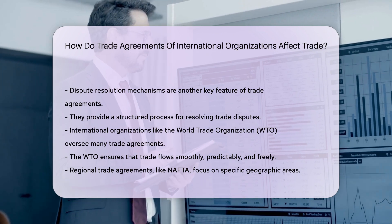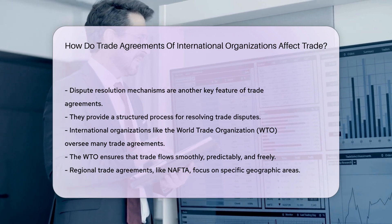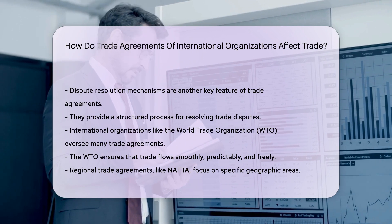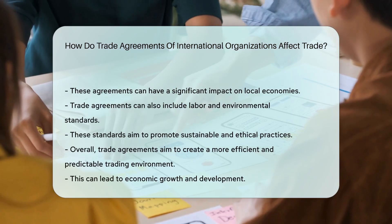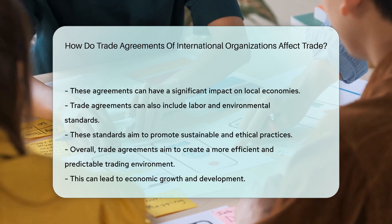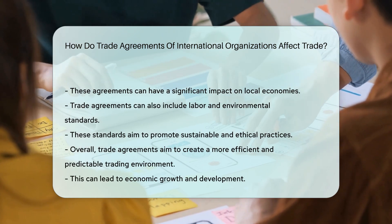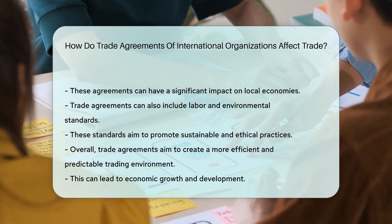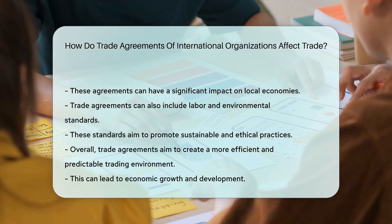Regional trade agreements, like NAFTA, focus on specific geographic areas and can have a significant impact on local economies. Trade agreements can also include labor and environmental standards, which aim to promote sustainable and ethical practices.